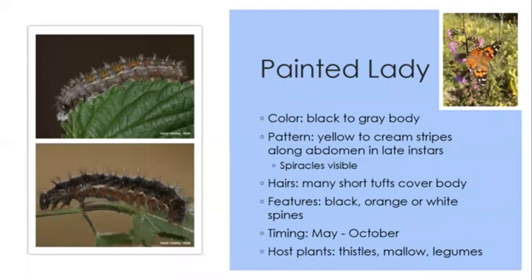Painted lady caterpillars are quite variable in color but typically have a black to gray body with yellow or cream stripes along the sides. The spiracles can be seen black, outlined in cream. This caterpillar has both short tufts of hair and spines that can be orange or white. May through October you can find this caterpillar on thistles, mallows, and different plants in the legume family.